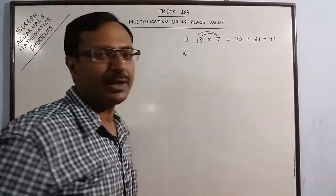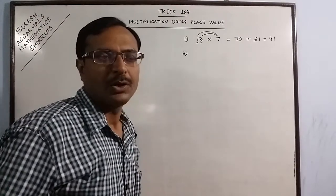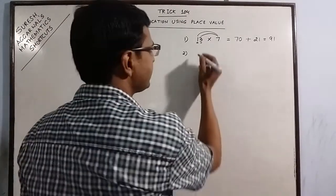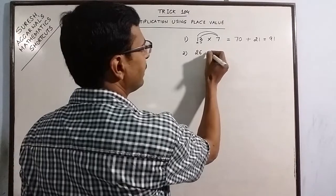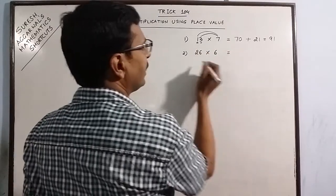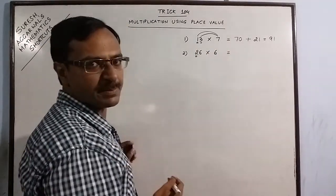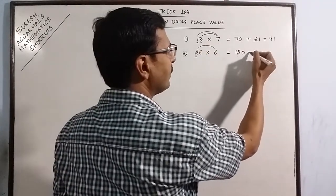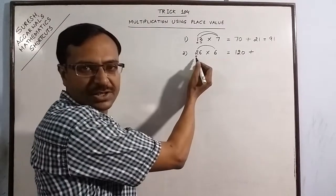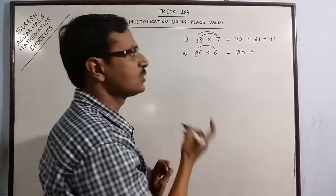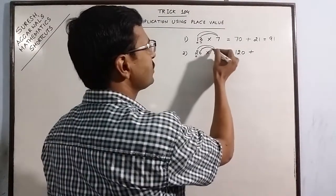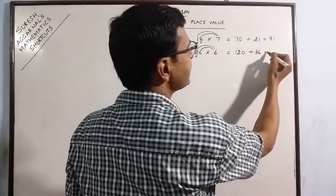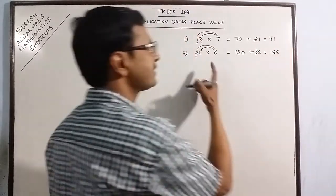Accordingly, you can extrapolate this method to find larger products. Say we have 26 multiplied by 6. This 2 is in the 10th place. So just multiply 2 by 6, you get 12 and put 1 zero because you have multiplied a digit which was in the 10th place. Then 6 into 6 is 36, just add the 2, 156 is the product.